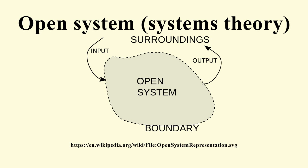In the social sciences, an open system is a process that exchanges material, energy, people, capital, and information with its environment.